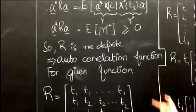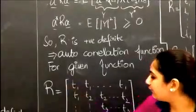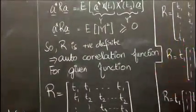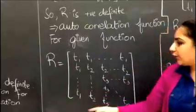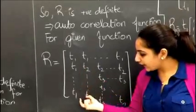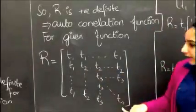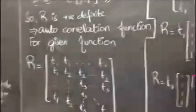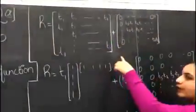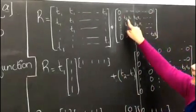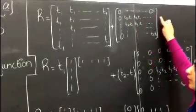Now for the given function, we have the following matrix. This was the generic rule to find the autocorrelation function. For this given function, we have a matrix in which the first row and first column entries are t1, then from A_22 onwards we have t2, and similarly up to tn.